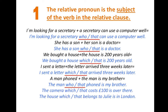Let me show you two more sentences: 'The camera which cost a hundred pounds is over there' and 'The house which — or that — belongs to Julie is in London.' Can you tell me which ones are the relative pronouns? The relative pronoun in the first sentence is 'which' or 'that,' and in the second sentence it is also 'which' or 'that.' In the first sentence, the relative clause is 'which costs a hundred pounds.'